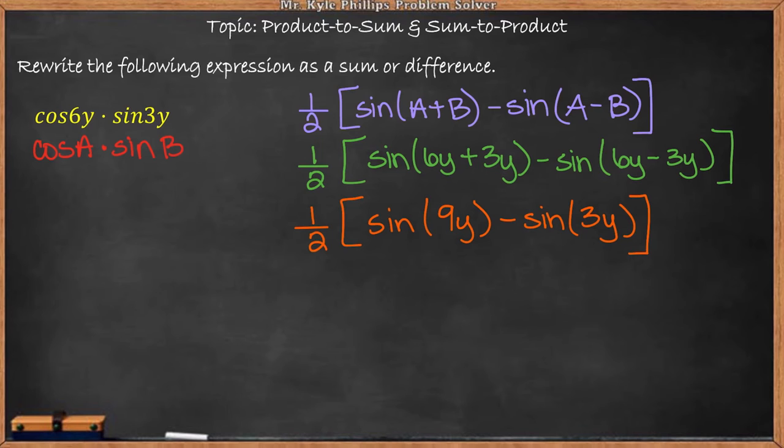So our answer is going to be 1 half sine of 9y minus 1 half times sine of 3y. So here this is going to be our solution.